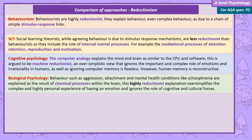Biological psychology is highly reductionist. These psychologists explain behaviours such as aggression, attachment, and mental health conditions like schizophrenia as the result of chemical processes happening within the brain. This oversimplifies the complex and highly personal experience of having an emotion, and ignores the role of cognitive and cultural forces.